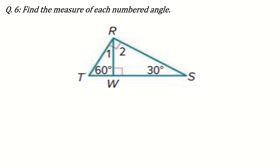I have told you in my other videos also that this question number 6 can be a different question in your exam, so I am just following one format. Just try to understand the concept. They are saying find the measure of each numbered angle — we have to find angle 1 and angle 2.